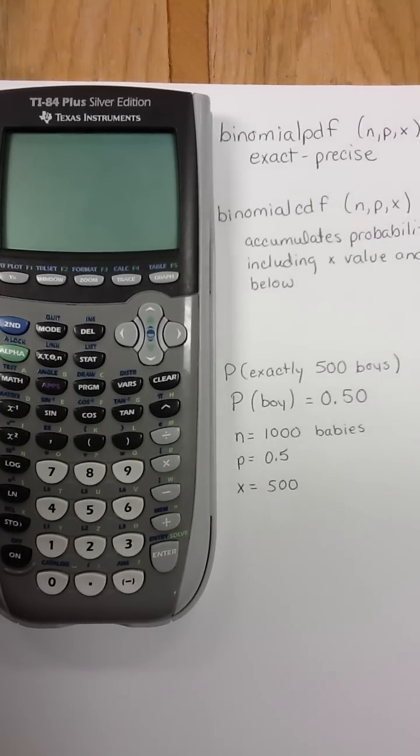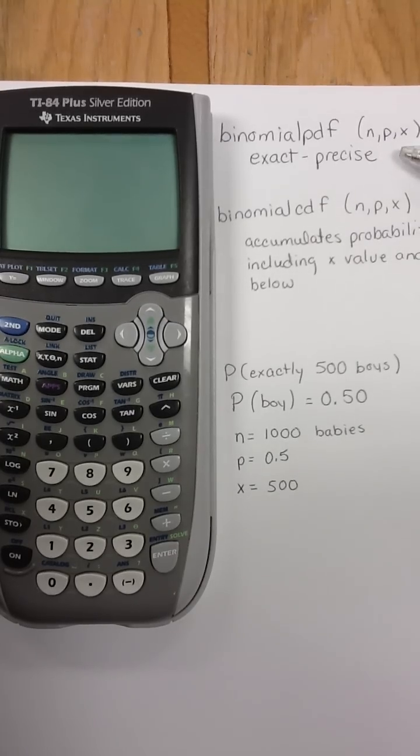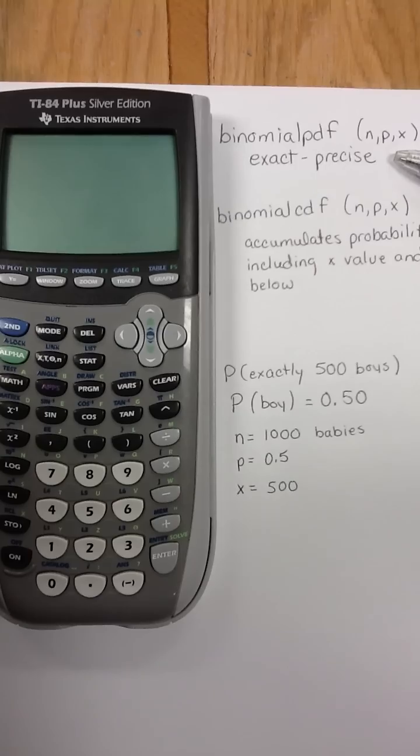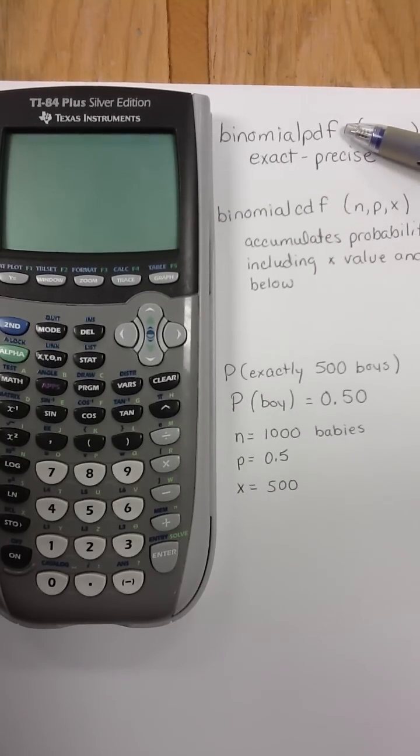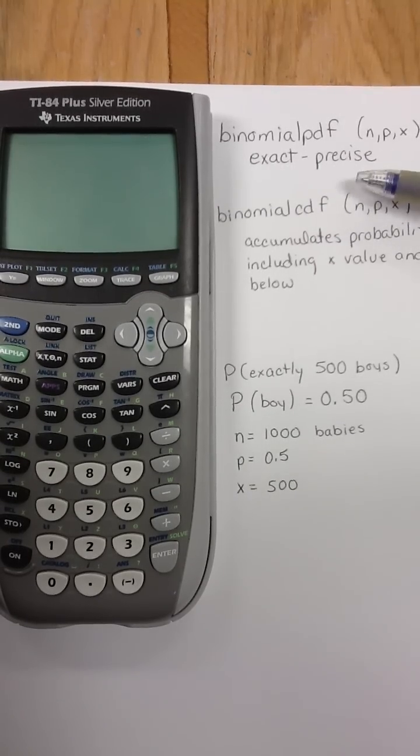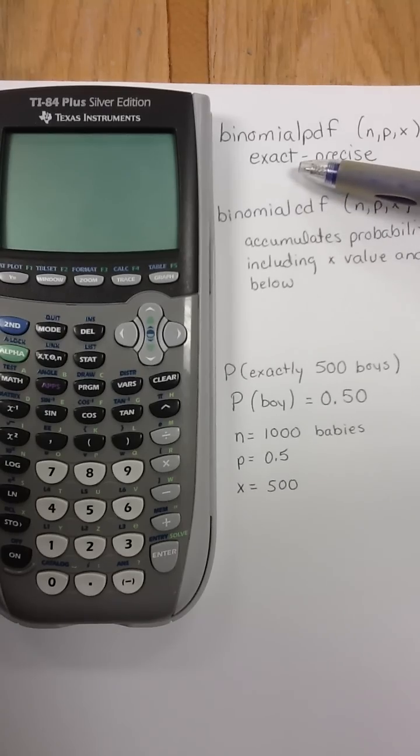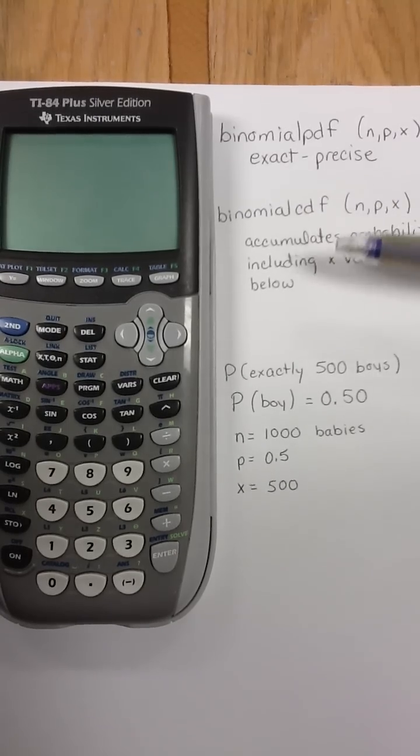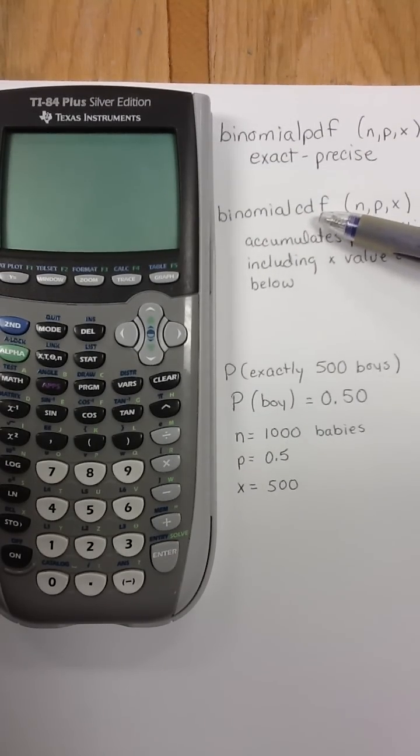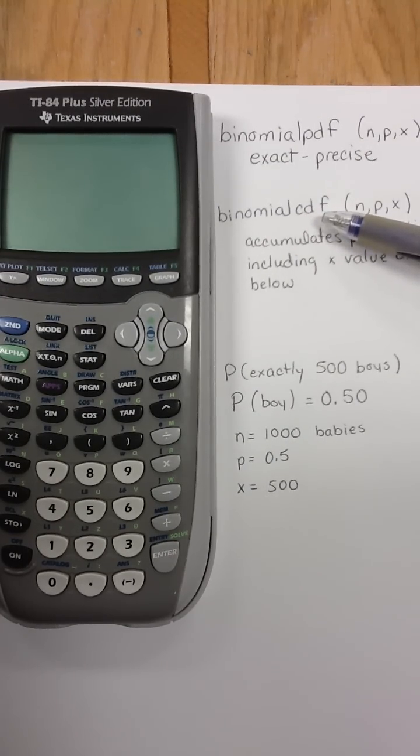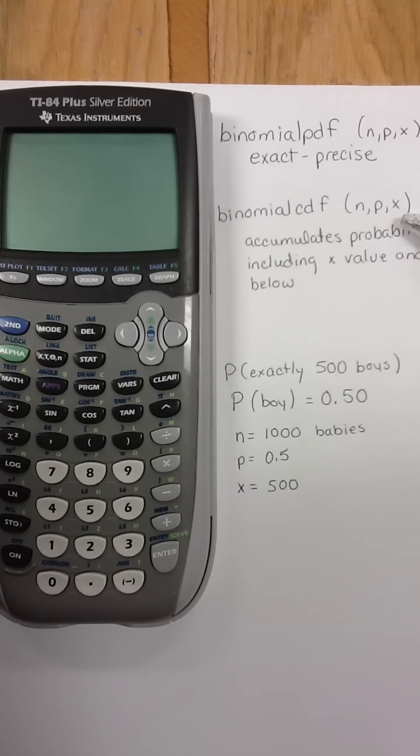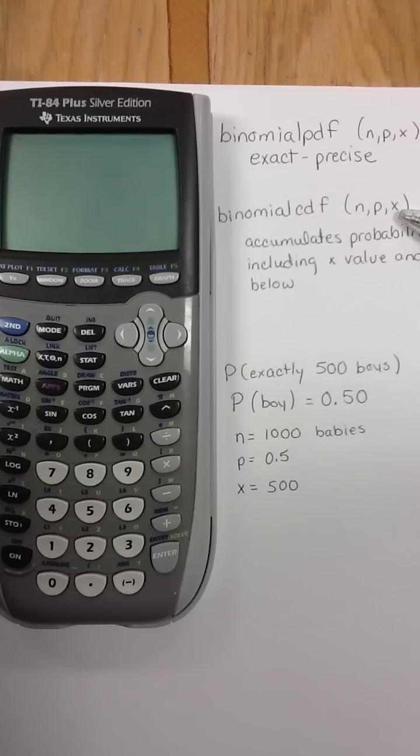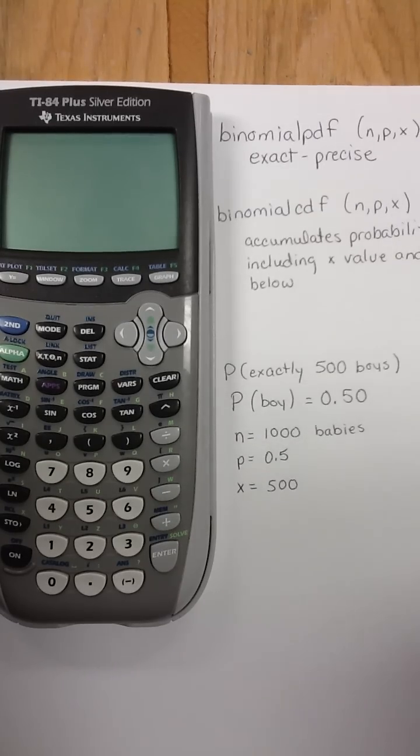We have two functions that can help you out with doing these, otherwise the formulas can get a little complicated. They are the binomial PDF, which you'll be using when you have a precise or an exact value that you're looking for. There is also the binomial CDF, which is a cumulative function. It will accumulate the probabilities from the x value and below. I'm just going to give you an example of how we do that on the calculator.